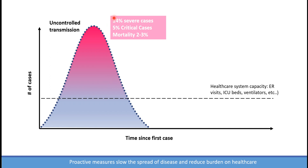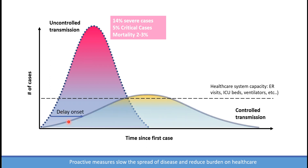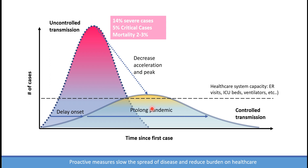Because we don't want to overwhelm the healthcare system, we need interventions in the community aimed to do the following: number one, delay the onset as much as possible; decrease the acceleration; and decrease the peak to a level lower than the capacity of the healthcare system. We also aim to prolong the pandemic as much as possible so we can spread severe cases over time, allowing our healthcare system to manage those cases.